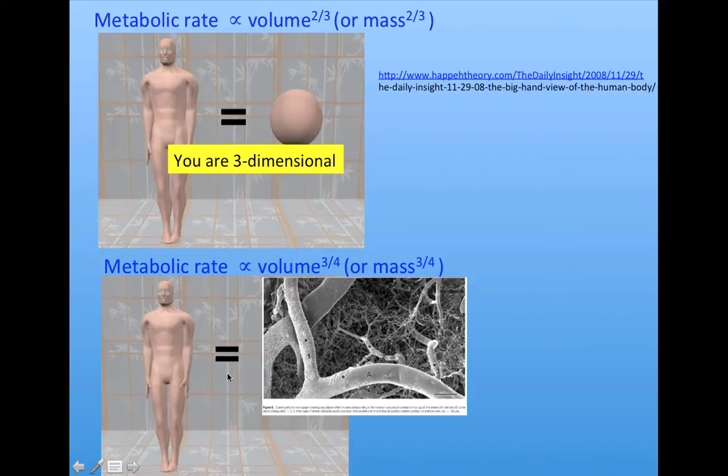But what West-Brown and Enquist are saying is that because we have these fractal branching distribution networks, internally we aren't three-dimensional, but rather we have some kind of fractal dimension that's between three and four dimensions, approaching four dimensions because of the space-filling aspect of these fractals, and that metabolic rate scales with volume or mass to the three-fourths, completely in analogy with this three-dimensional idea, but this would be as if we were being approximated by a four-dimensional sphere.